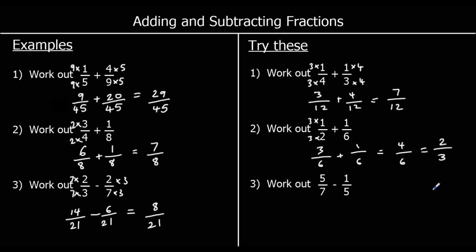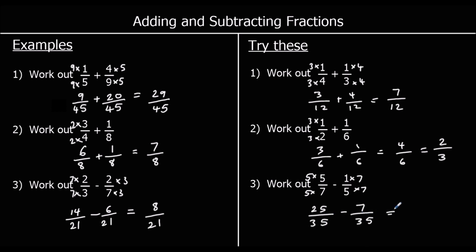Question three: five-sevenths take away one-fifth. We make the bottom numbers the same by multiplying the top and bottom of five-sevenths by five, and the top and bottom of one-fifth by seven. That gives twenty-five over thirty-five minus seven over thirty-five. Twenty-five take away seven is eighteen, so the answer is eighteen over thirty-five.